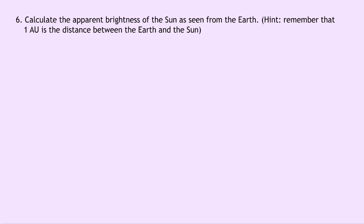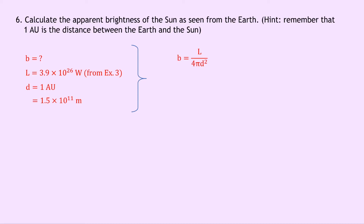Question 6 says to calculate the apparent brightness of the sun as seen from the earth, noting that 1 AU is the distance between the earth and the sun. We're trying to find apparent brightness b. L is 3.9 times 10 to the 26 watts (from Question 3), and d is 1 AU, which is 1.5 times 10 to the 11 meters. Writing our equation: b equals L over 4 pi d squared. Substituting in gives 3.9 times 10 to the 26 divided by 4 pi times 1.5 times 10 to the 11 squared, giving an answer of 1379 watts per meter squared.